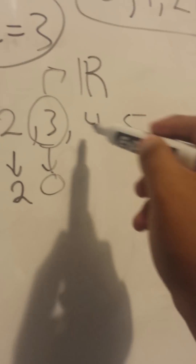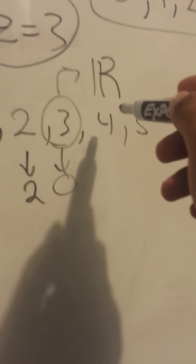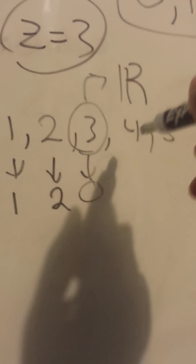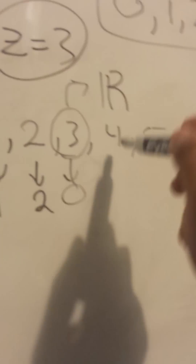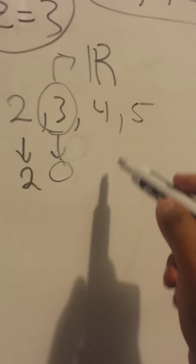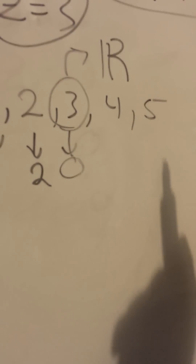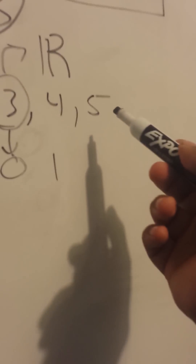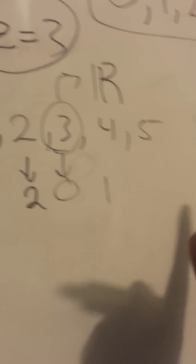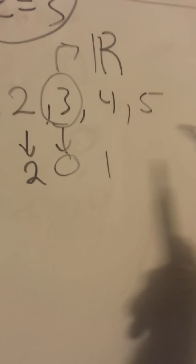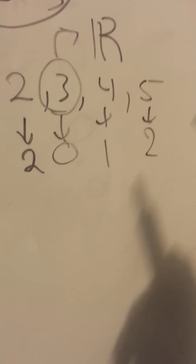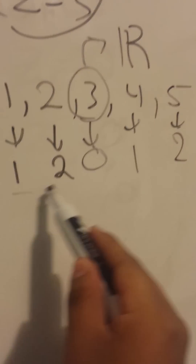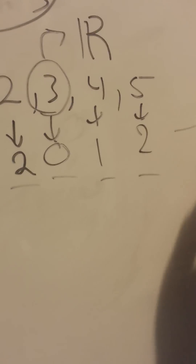To find 4 in mod 3: how many times does 3 go into 4? Once, with a remainder of 1. For 5: how many times does 3 go into 5? Once, with a remainder of 2. So the only numbers that appear are still 0, 1, and 2, just like before.